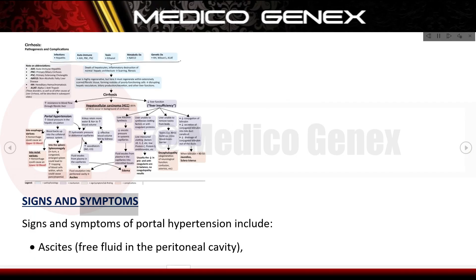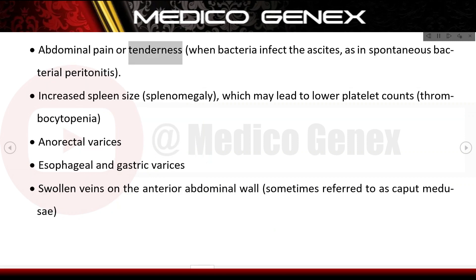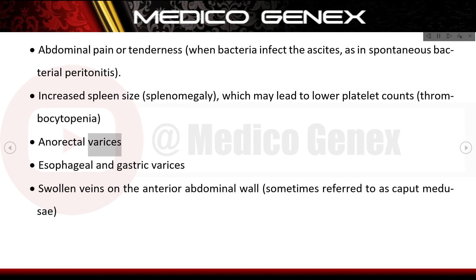Signs and symptoms of portal hypertension include ascites — free fluid in the peritoneal cavity — abdominal pain or tenderness when bacteria infect the ascites as in spontaneous bacterial peritonitis, and increased spleen size (splenomegaly), which may lead to lower platelet counts (thrombocytopenia).